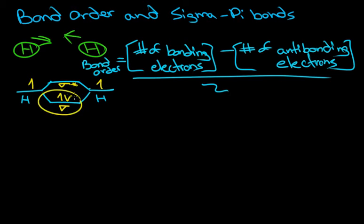That means we have one bonding orbital. So we take the number of bonding electrons, and so one bonding orbital has two electrons. So that's two minus zero anti-bonding, divide the whole thing by two, and that equals two over two, and that equals one.